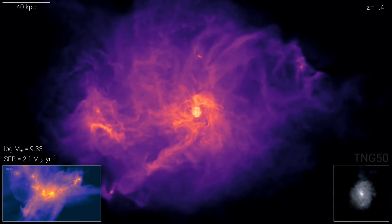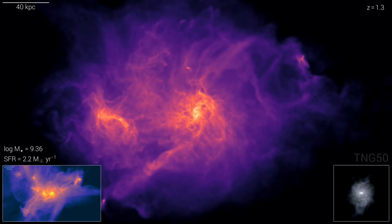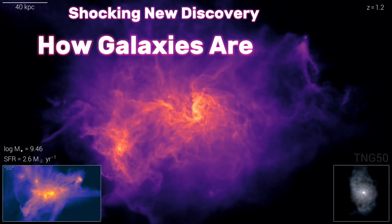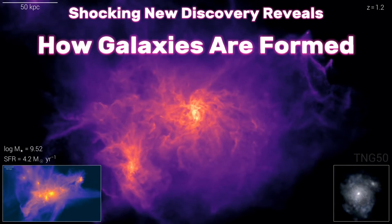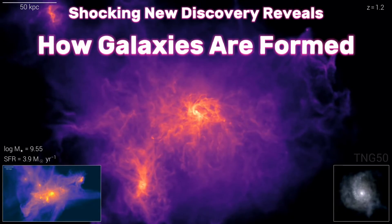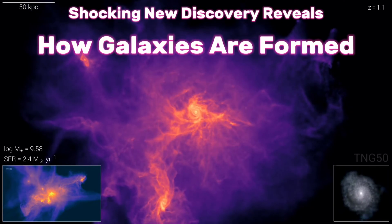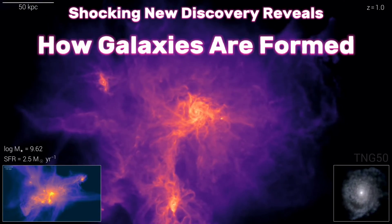Imagine a time when the universe was nothing but a dark and empty void — no stars, no planets, no galaxies, just a vast expanse of nothingness. How did we get from there to here? How did the universe create such magnificent structures out of chaos? And how did it do it so fast?